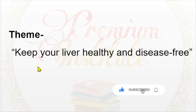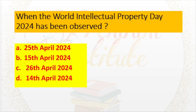When has the World Intellectual Property Day 2024 been observed? a. 25th April 2024, b. 15th April 2024, c. 26th April 2024, d. 14th April 2024. Answer: 26th April 2024. Theme: IP and the SDGs — Building our Common Future with Innovation and Creativity.